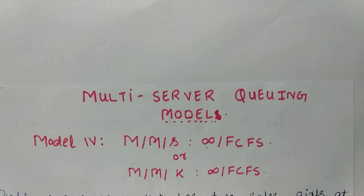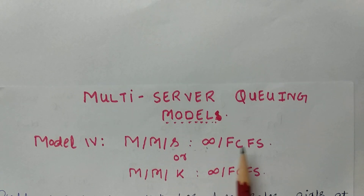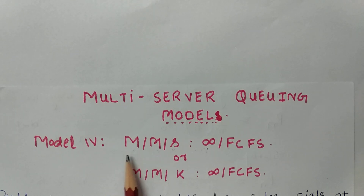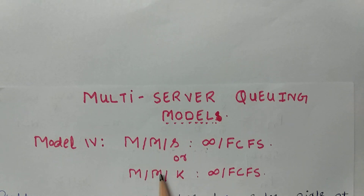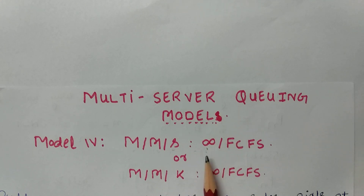Hello friends, welcome to my YouTube channel. Today I am going to discuss a very important problem on the fourth model of queuing theory, that is M/M/S/∞/FCFS. Here the first M stands for Poisson arrival or exponential inter-arrival time, the second M stands for Poisson departure or exponential service time, and S stands for multiple servers. In this model I am taking multiple but identical servers in parallel.